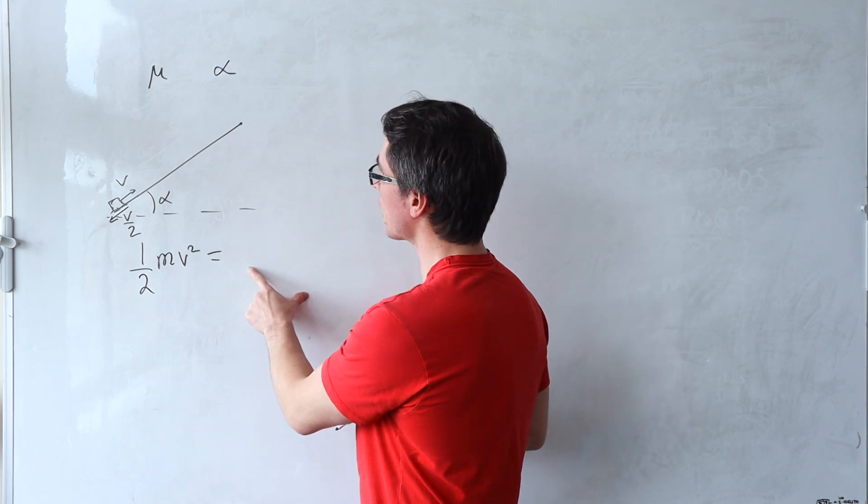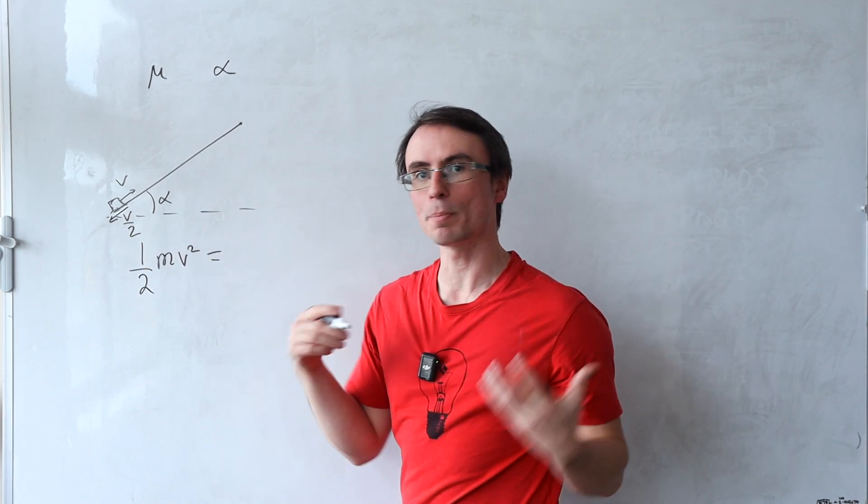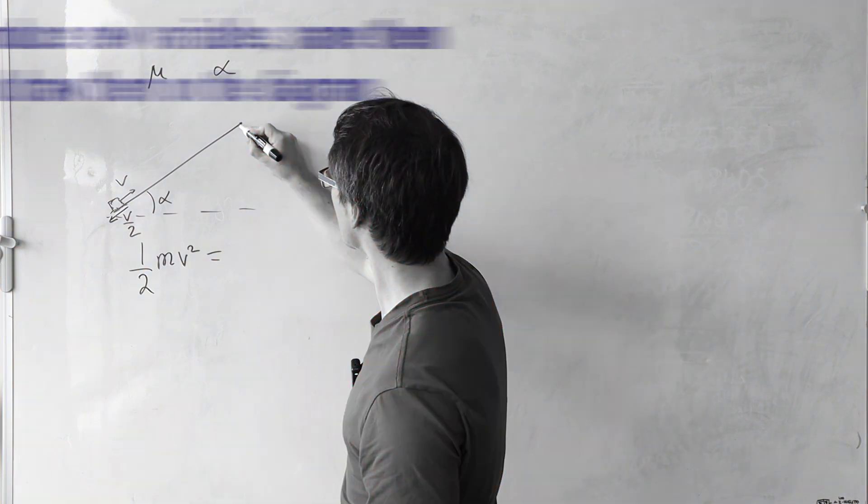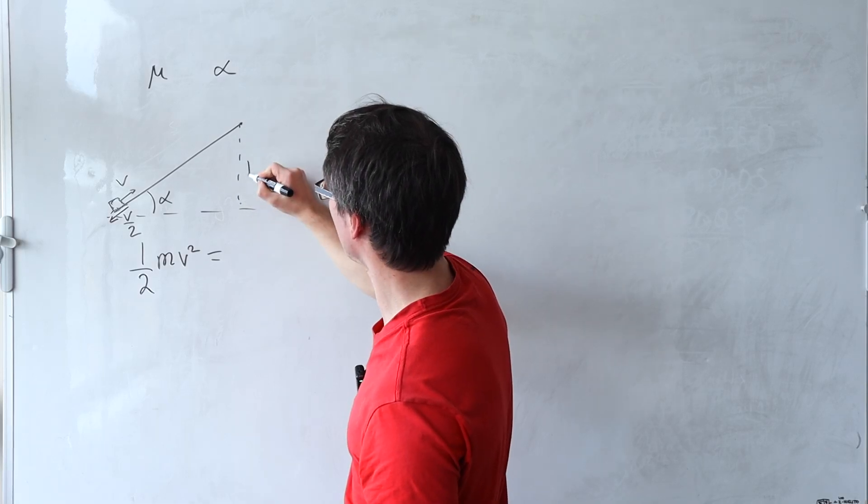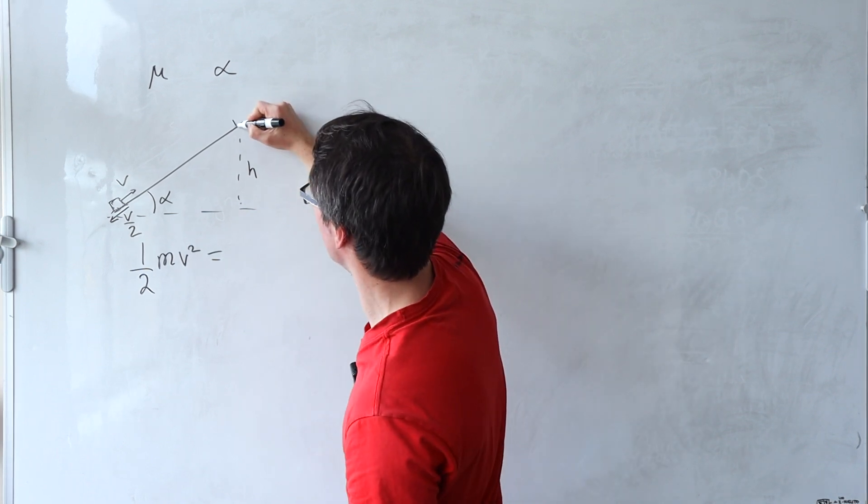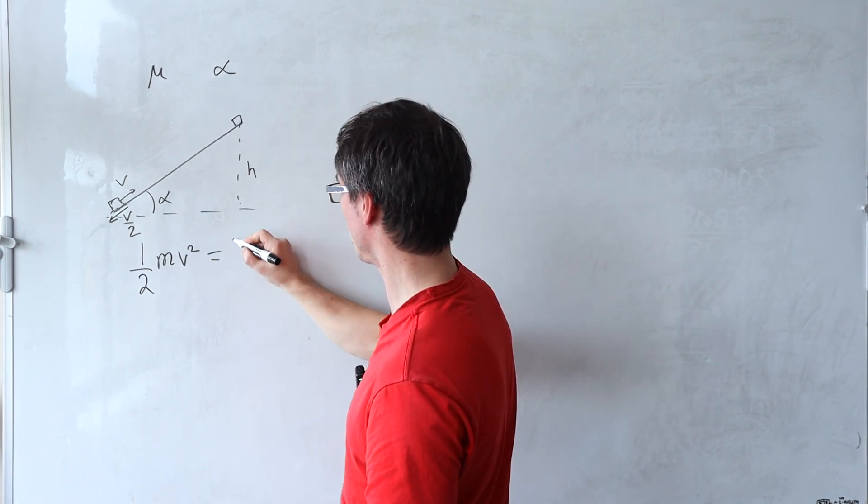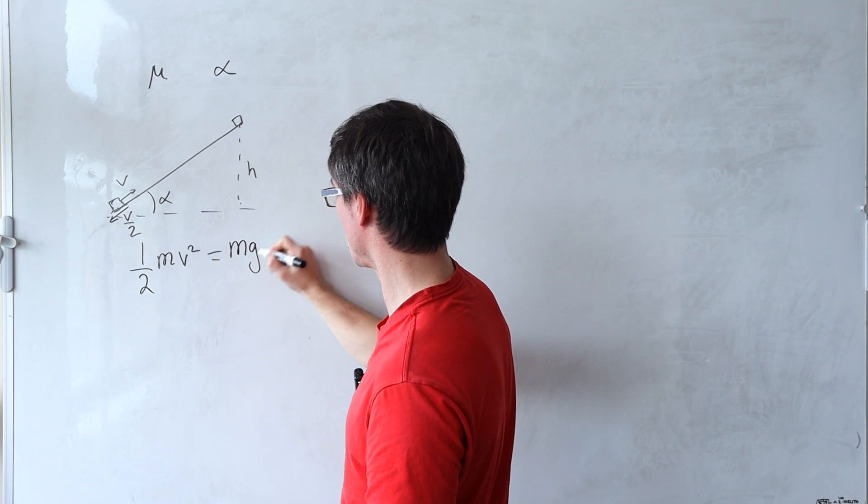Now some of this energy is going to go to potential energy and in physics olympiads, don't be afraid to introduce new variables, name them and draw them on the diagram. Introduce another variable here which is the height that this object reaches. So this is equal to mgh.